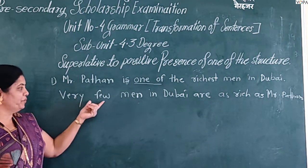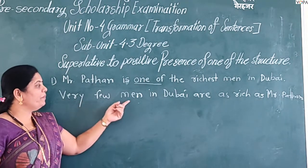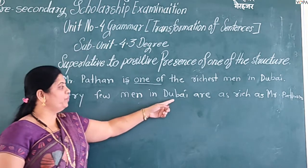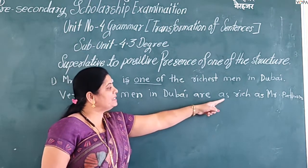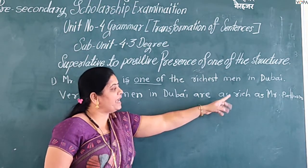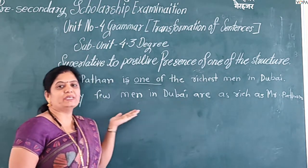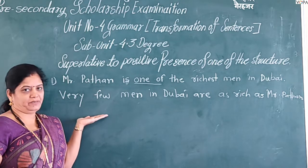So the converted positive degree sentence becomes: 'Very few men in Dubai are as rich as Mr. Pathan.' We start with 'very few,' take the common noun instead of the subject, and then form the comparison.